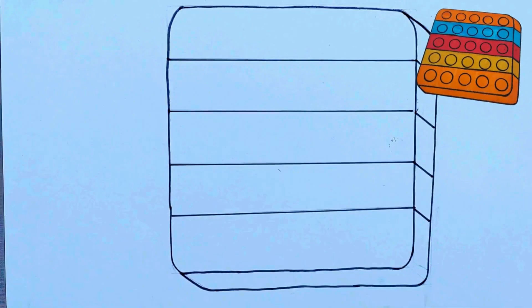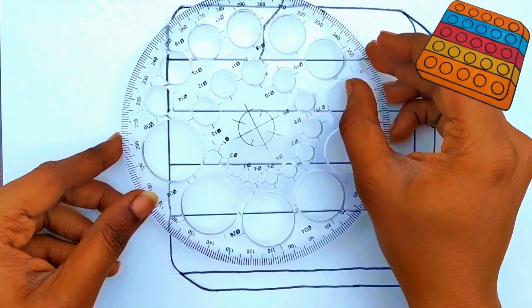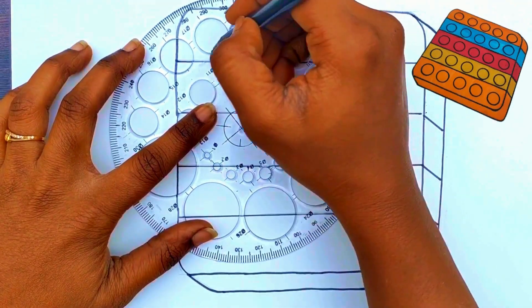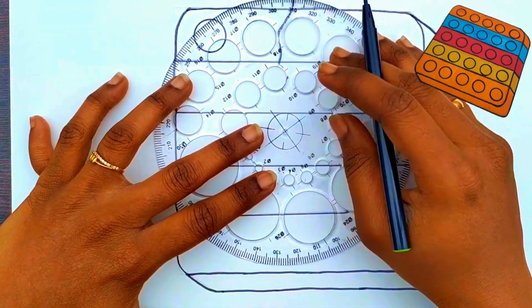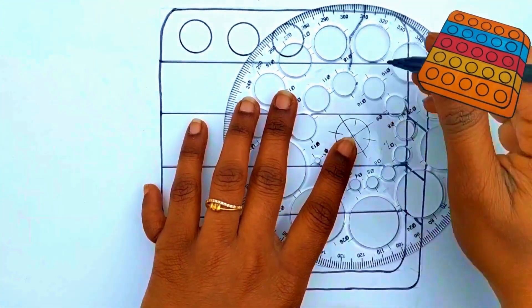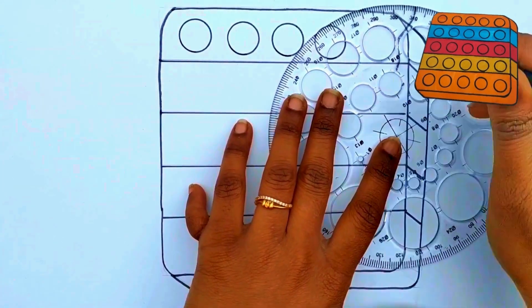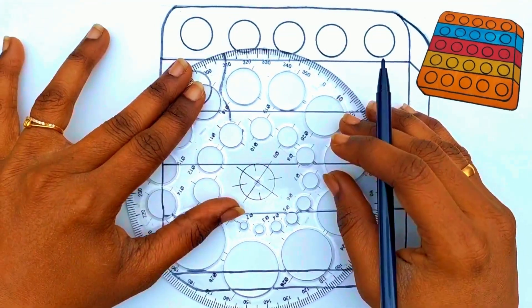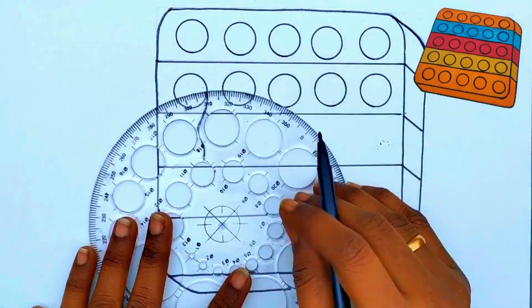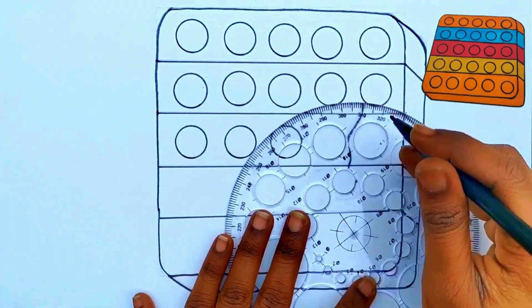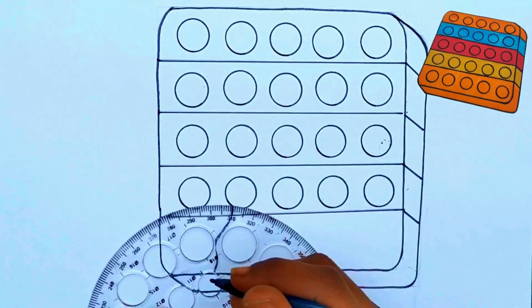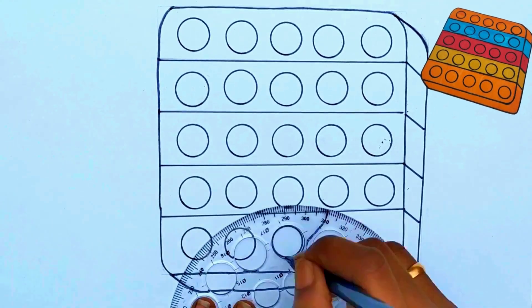Now we have to draw circles. Draw two small slanting lines. Wow! It looks beautiful Raj.